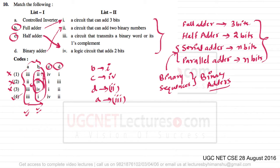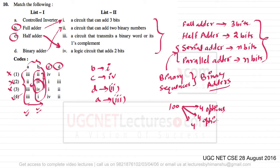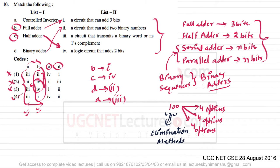This is a small trick you can use. In any competitive examination — for example, the UGC NET — if you have 100 questions and all questions have four options, you have a choice. There are multiple ways of solving: either you know the correct answer, or you use prediction or the elimination method.